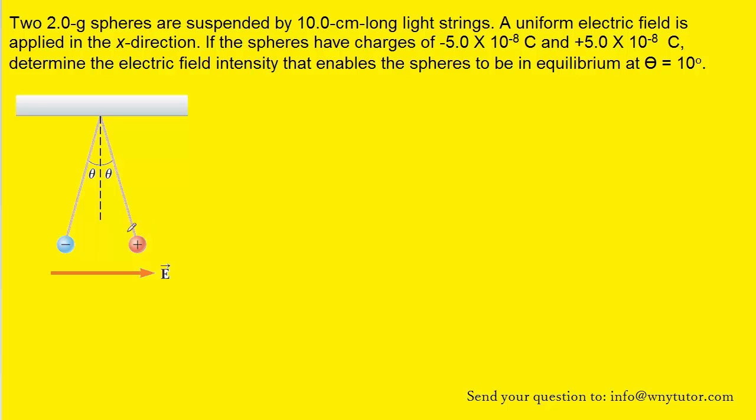We're going to begin this problem by drawing a free body diagram for the positively charged sphere. It turns out that there are four forces acting on the positively charged sphere. Perhaps the most obvious is the gravitational force, which points directly downward, and we've labeled that as mg.